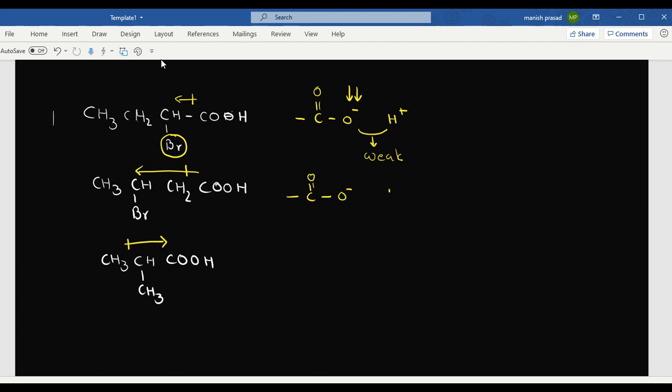In this one also we have the same thing, but bromine is on the first, second, third carbon. Here from the second carbon to withdraw the electron, the electron density will be more. If electron density is more, then the bond will be stronger.